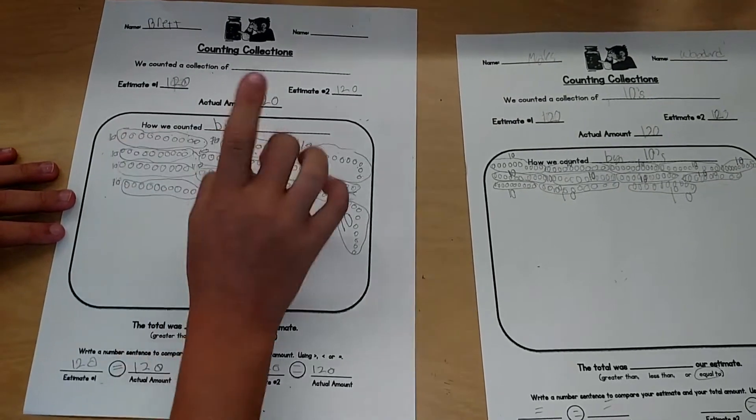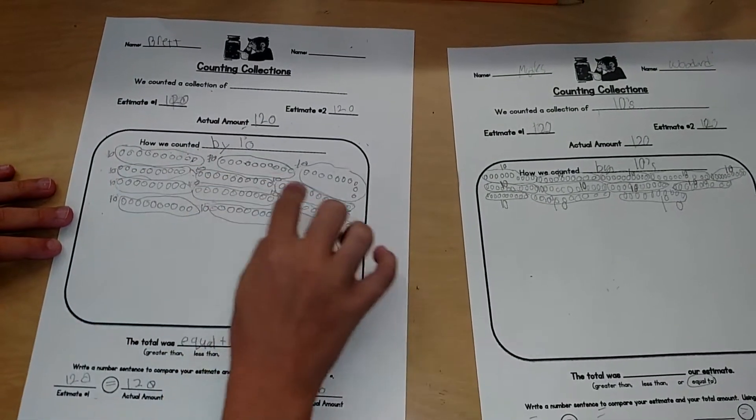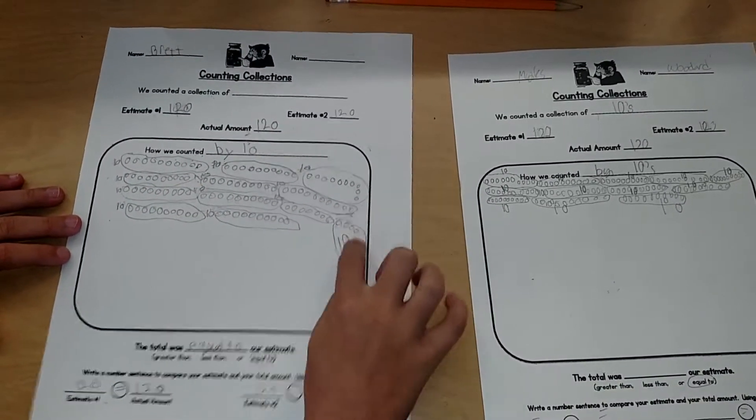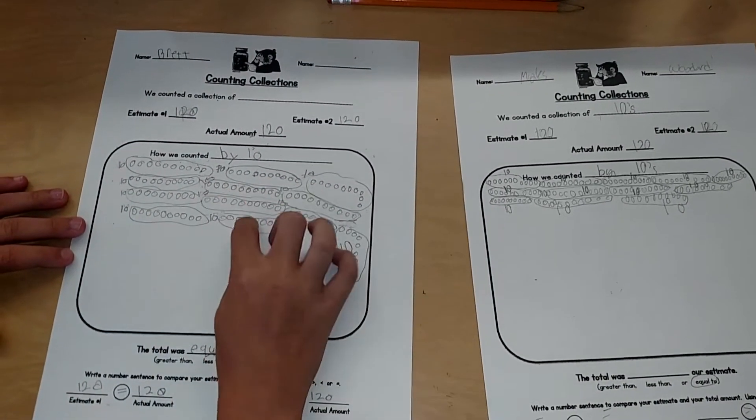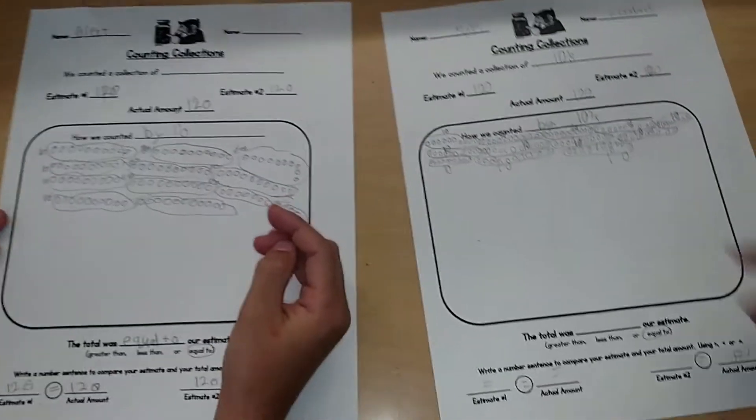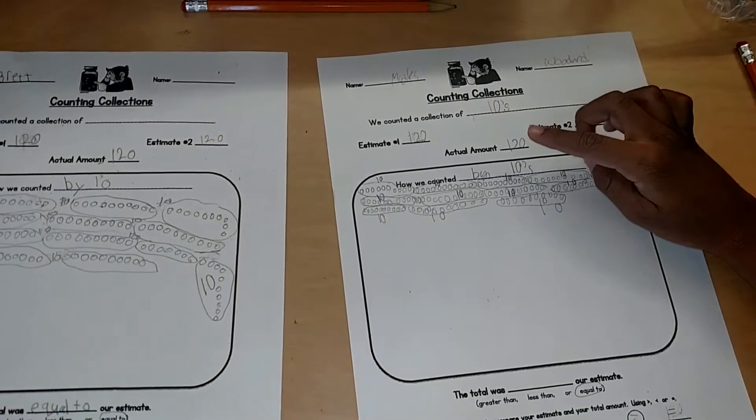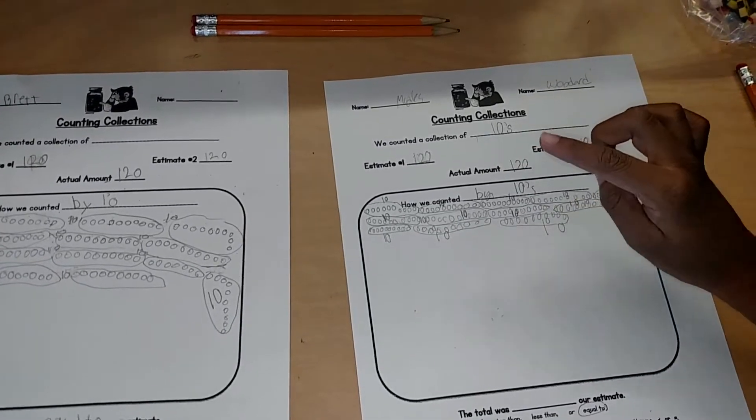So 10, 20, 30, 40, 50, 60, 70, 80, 90, 100, 110, 120. And then we estimated and we thought it was going to be 120.